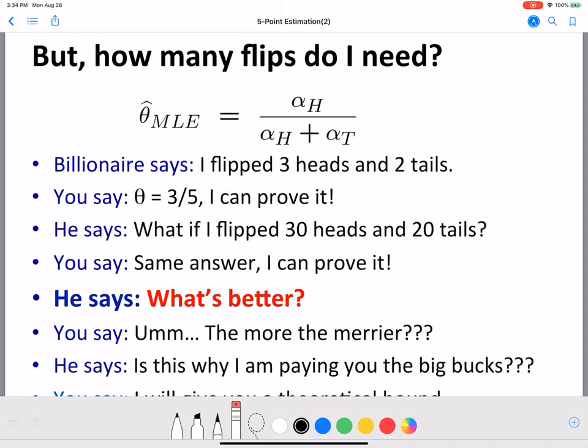In the last lecture we looked at point estimation and we learned how to do point estimation using maximum likelihood. In this lecture we will look at Hoeffding's inequality. Hoeffding's inequality gives you the number of data points that you need to collect to reliably estimate your parameter value.